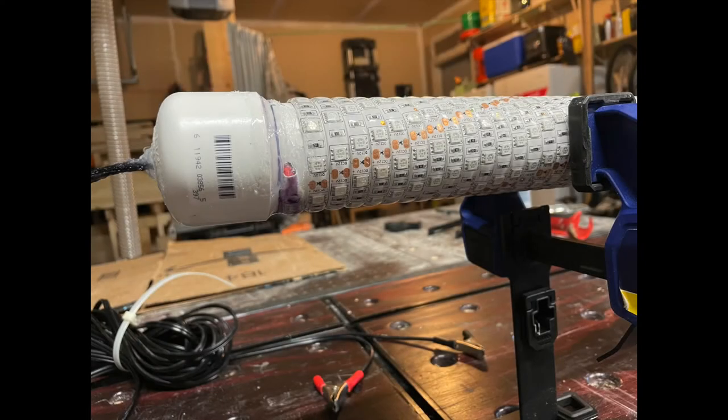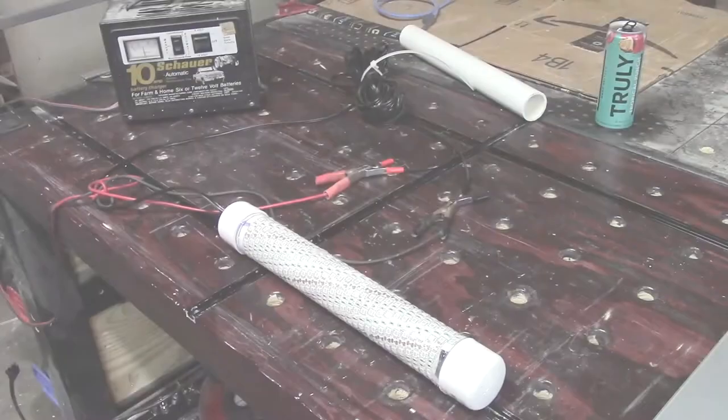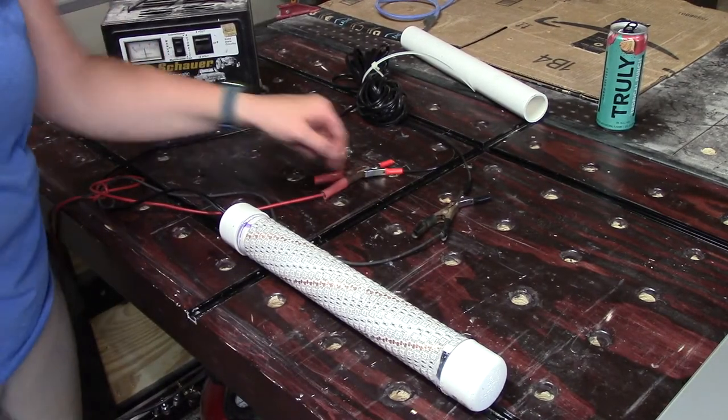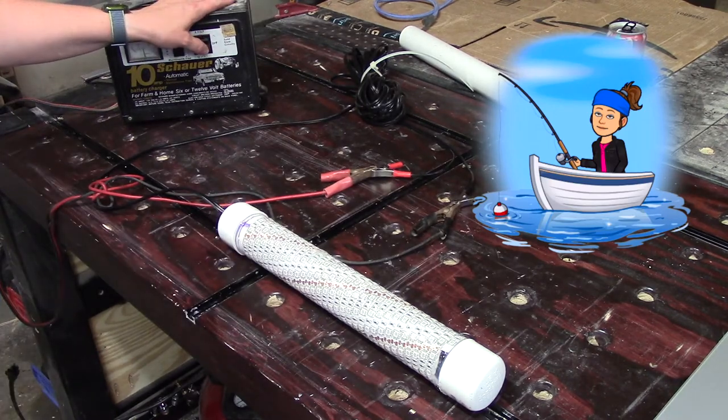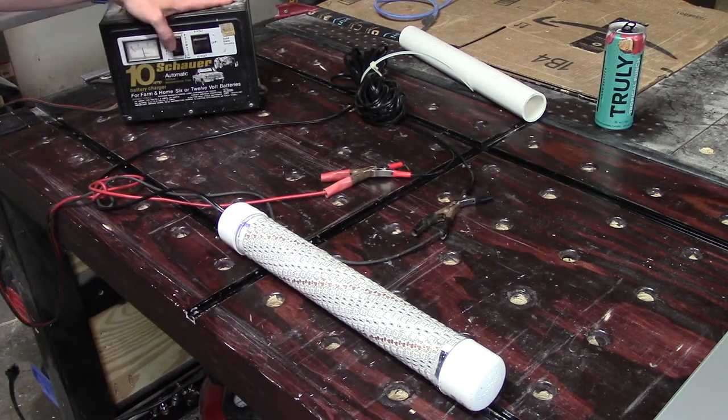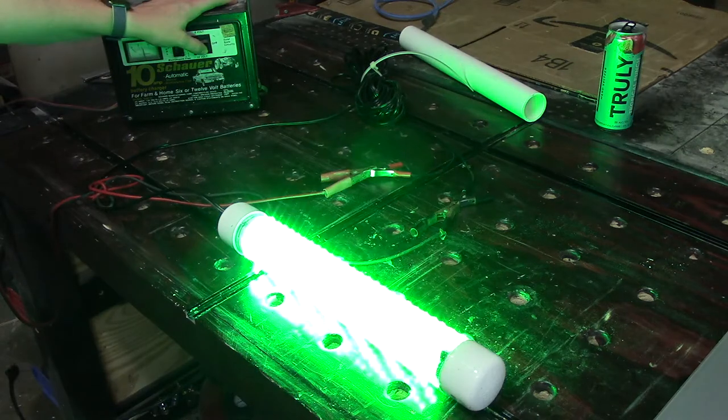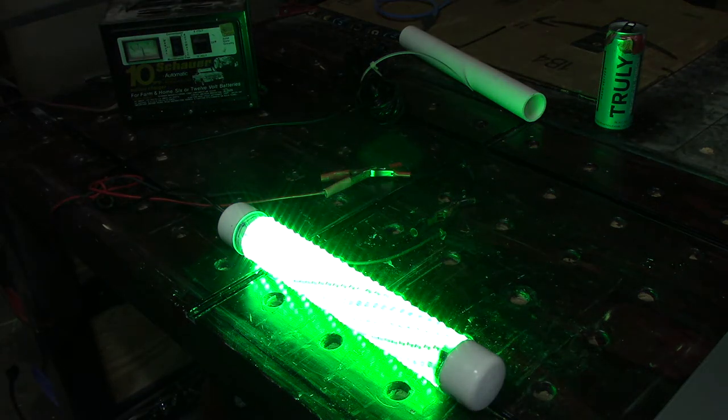I let this light dry for a day or two before taking it for a test run. This light is originally designed to be used in a boat with a 12 volt battery, but you can also use this off the dock or in an ice house. If you don't have a 12 volt battery available, you can use a battery maintainer.